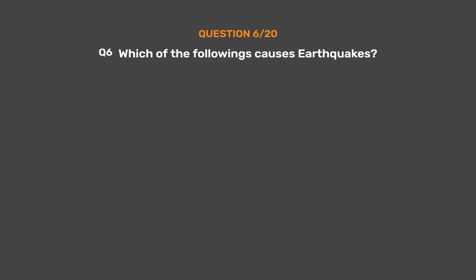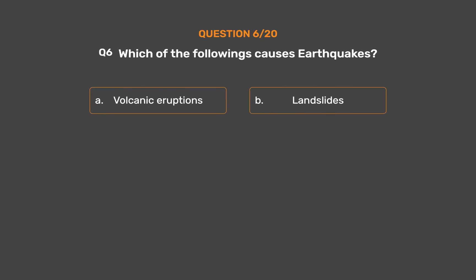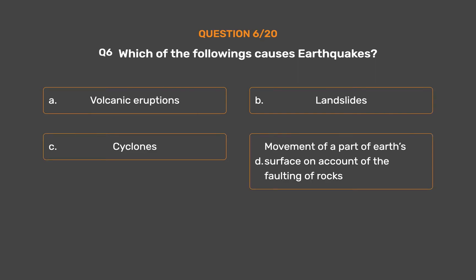Question number 6. Which of the following causes earthquakes? Option A: Volcanic eruptions. Option B: Landslides. Option C: Cyclones. Option D: Movement of a part of Earth's surface on account of the faulting of rocks. The correct answer is Option D, movement of a part of Earth's surface on account of the faulting of rocks.